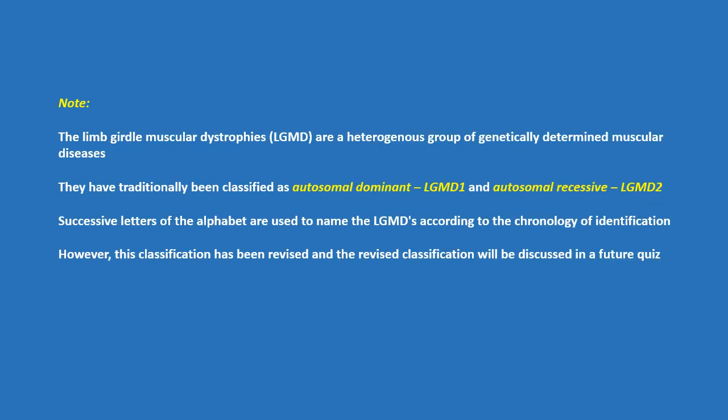Note that the limb girdle muscular dystrophies, or LGMD, are a heterogeneous group of genetically determined muscular diseases. They have traditionally been classified as autosomal dominant (LGMD1) and autosomal recessive (LGMD2). Successive letters of the alphabet are used to name the LGMDs according to the chronology of identification. However, this classification has been revised, and the revised classification will be discussed in a future quiz.